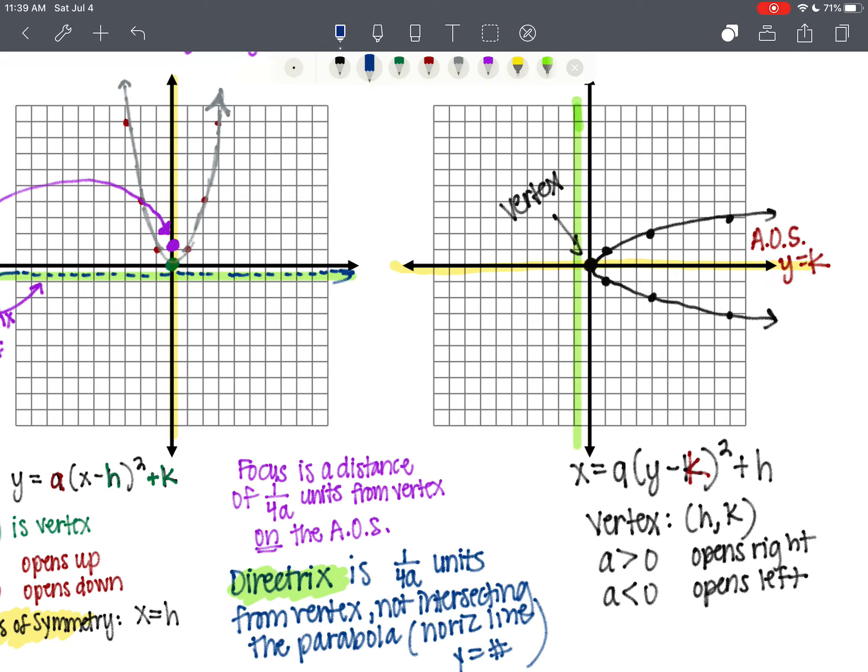And the directrix is x equals some number. That's our directrix. And don't forget your focus. Your focus is going to be like a berry sitting in a bowl. So it's going to be kind of floating right there to the right this time away from the vertex on the axis of symmetry still. So same definition applies.